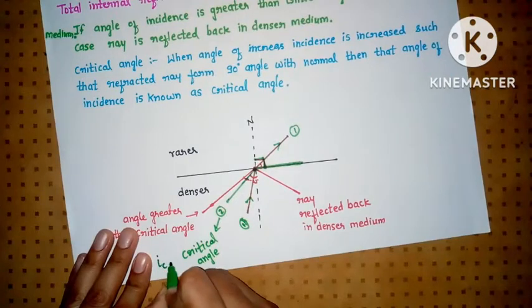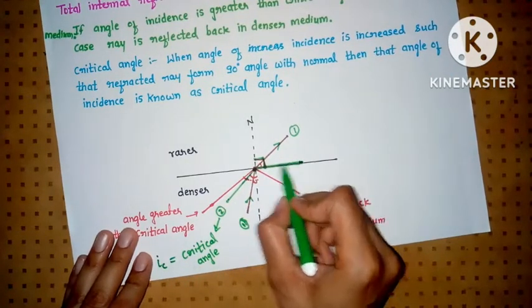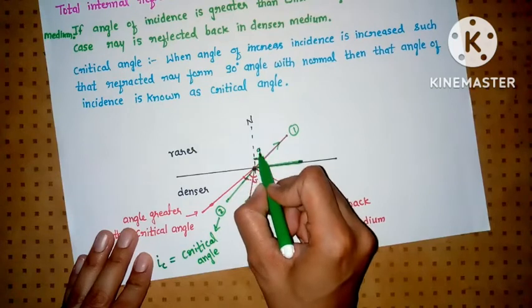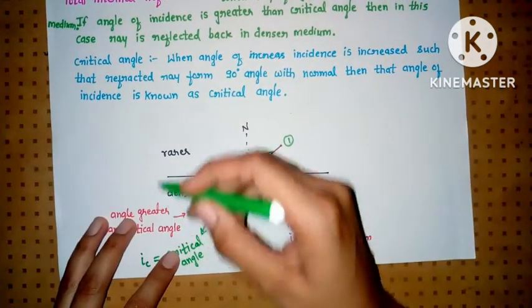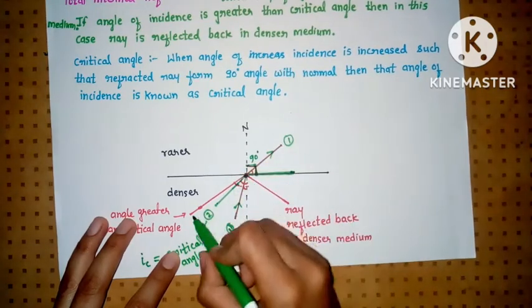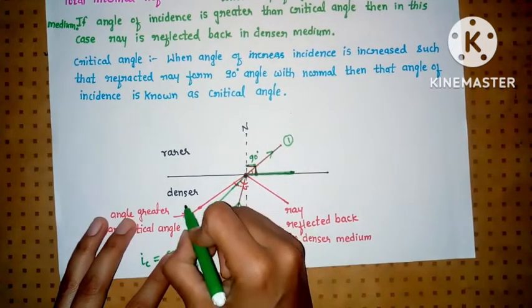is known as critical angle for which this refracted ray forms 90 degrees with normal. Now if we increase the angle of incidence beyond the critical angle, suppose in the third case we increased the angle of incidence further,